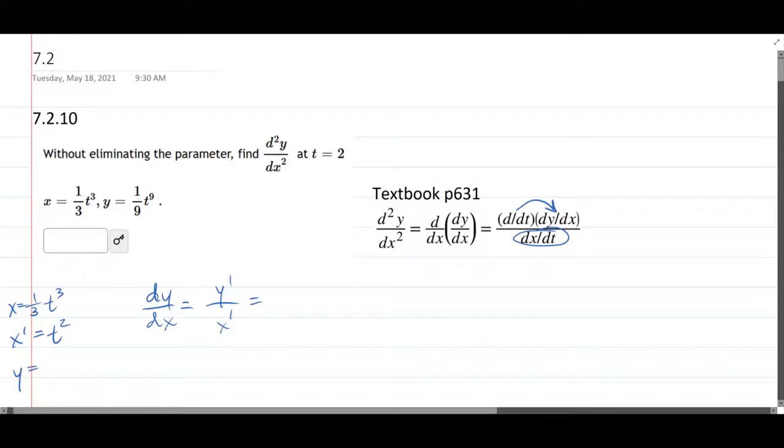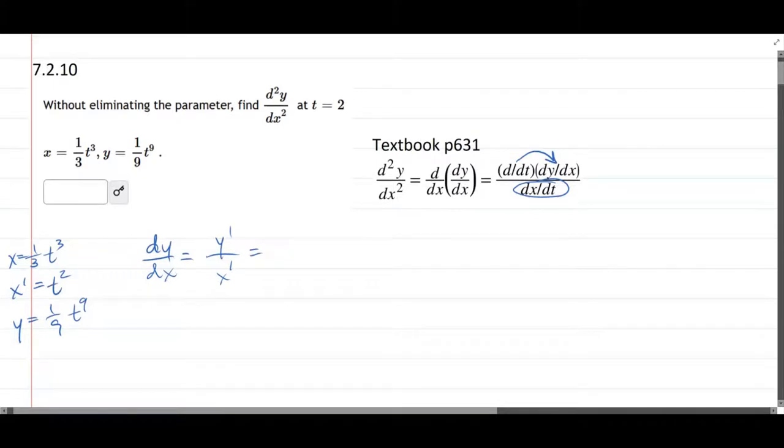So regular y is one-ninth t to the ninth, and we're taking the t derivative, so y prime, the ninth power cancels out this ninth, and we bring it down, so it's t to the eighth. And we can just fill those in right here, y prime over x prime. We can reduce that to t to the sixth, just using algebra. All right, so that took care of dy dx.